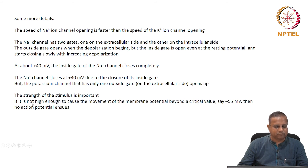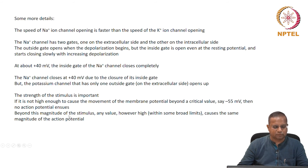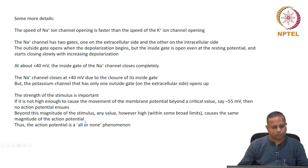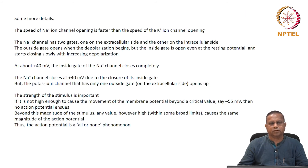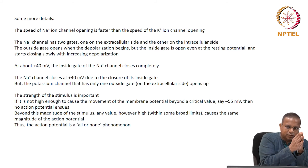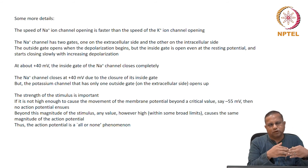The strength of the signal has to be such that it moves the membrane potential beyond minus 55 millivolts. If that happens, the action potential will automatically occur. Beyond this threshold, any stimulus magnitude — however high, within broad limits — causes the same magnitude of action potential. Thus the action potential is an all-or-none phenomenon: only if the membrane potential crosses minus 55 millivolts will there be an action potential; if it does not, there will be none.